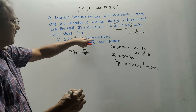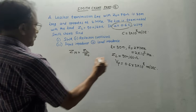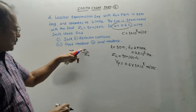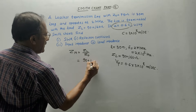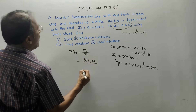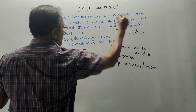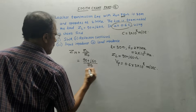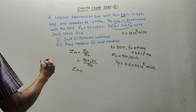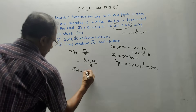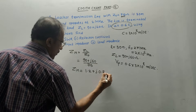Using the Smith chart, find the SWR, reflection coefficient, input impedance, and load admittance. We have the basic formula: the normalized load impedance Zin equals ZL upon Z0. Putting in the values, it is 90 plus j60 upon 75. Solving this using the complex mode of the calculator, it is 1.2 plus j0.8 ohms. This is the value of the normalized impedance.